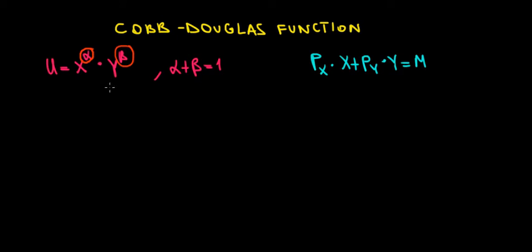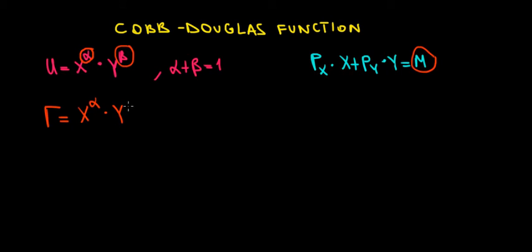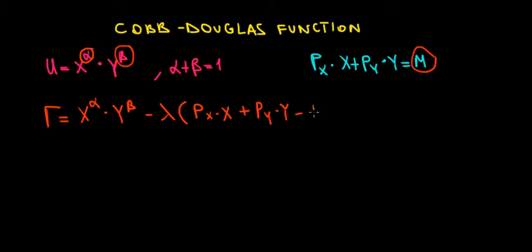Let's prove that relationship by using the Lagrange. We have the utility function and we also have a budget constraint: the money that we spend on x and the money that we spend on y has to make up the total money available to us. So let's write this entire relationship in our Lagrange, where we maximize x^α · y^β minus lambda times the constraint, which is px·x + py·y − n.